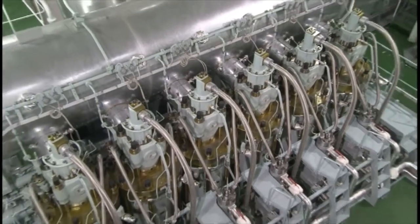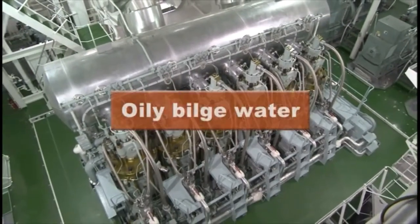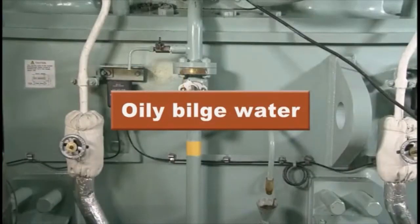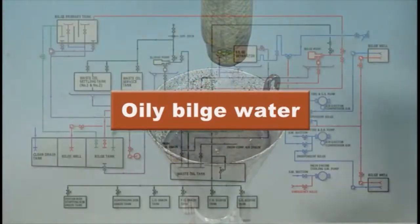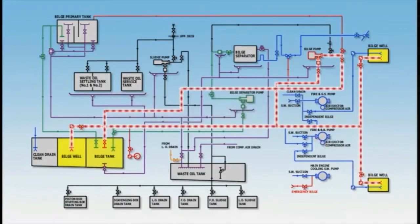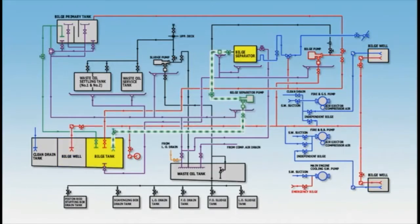Ship's bilge is roughly divided into two types according to their source. One is oily bilge water, composed of water and oil that leaks from engine room pipes during daily operation of machinery and during maintenance work. Oil and water leak out and mix together to create oily bilge water, also known as drainage bilge. This fluid is collected in a bilge well or in the upper section of a bilge tank. Oily bilge water is collected in the bilge tank, then transferred to the bilge separator where oil content is removed, and the water is discharged overboard.